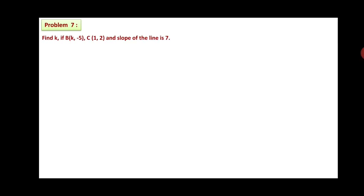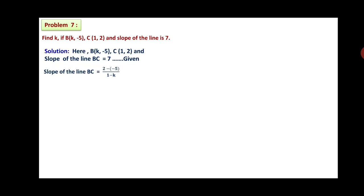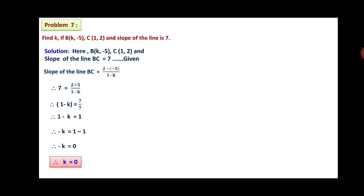Problem 7: Find k if B(k, −5) and C(1, 2) and the slope of line BC is 7. Given slope of BC = 7. Using the formula: slope = (2 − (−5))/(1 − k) = (2 + 5)/(1 − k) = 7/(1 − k). Setting this equal to 7: 7 = 7/(1 − k), so 1 − k = 1, therefore k = 0.